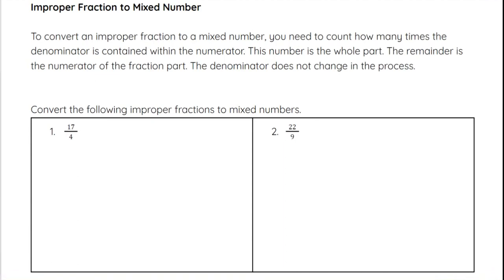Now we'll talk about how we change improper fractions to mixed numbers. To convert from an improper fraction to a mixed number, count how many times the denominator is contained within the numerator — that is your whole part. The remainder becomes the numerator of the fraction part. The denominator stays the same throughout this process.